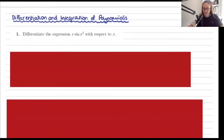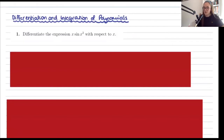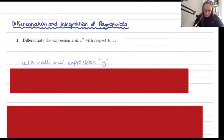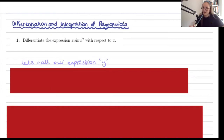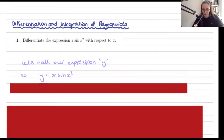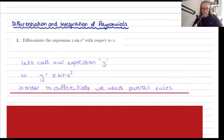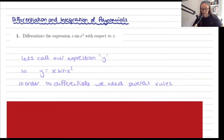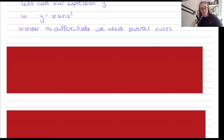The first topic is differentiation and integration of polynomials. This first question asks you to differentiate the expression x·sin(x²). I thought this was a really good place to start because it has examples of all sorts of differentiation skills that you will need to know. I named this expression y — y equals x·sin(x²) — so that you can differentiate y.